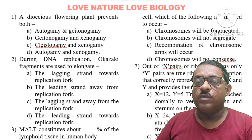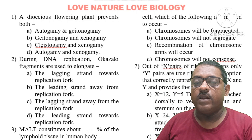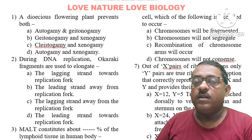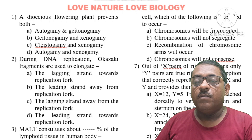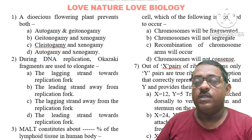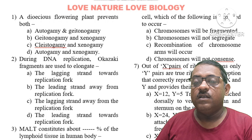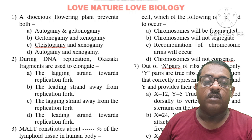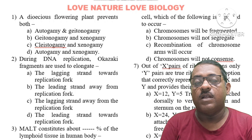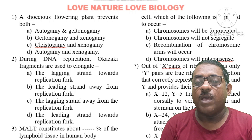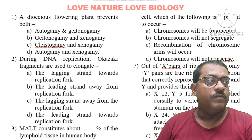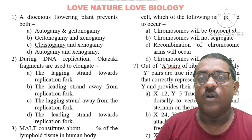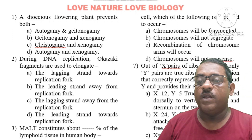Dioecious flowering plants prevent both autogamy and geitonogamy, because a monoecious plant has both male and female flowers. Autogamy and geitonogamy are self-pollination processes, so dioecious plants prevent both autogamy and geitonogamy.